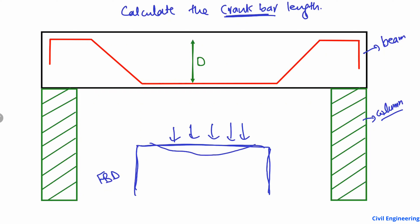Now if I apply the load on this frame structure, the beam will try to bend, showing a positive bending moment at the mid-span and negative bending moment at the two supports. For positive bending moment we have to provide reinforcement here, and also for negative bending moment we have to provide reinforcement at the supports, because concrete is weak in tension and we always provide steel reinforcement where tensile stresses occur.